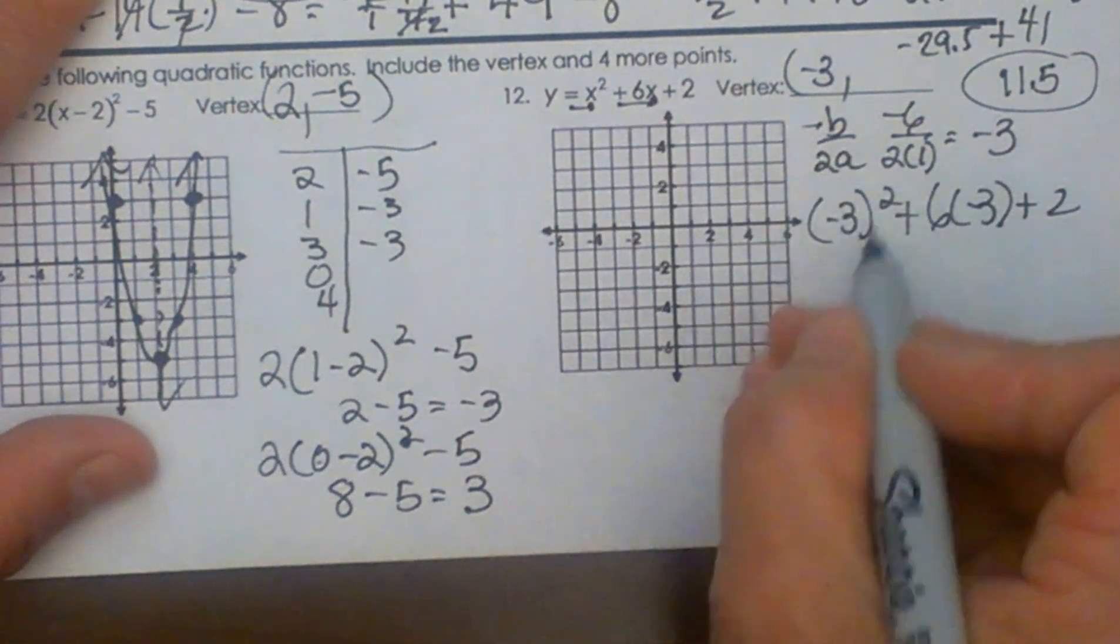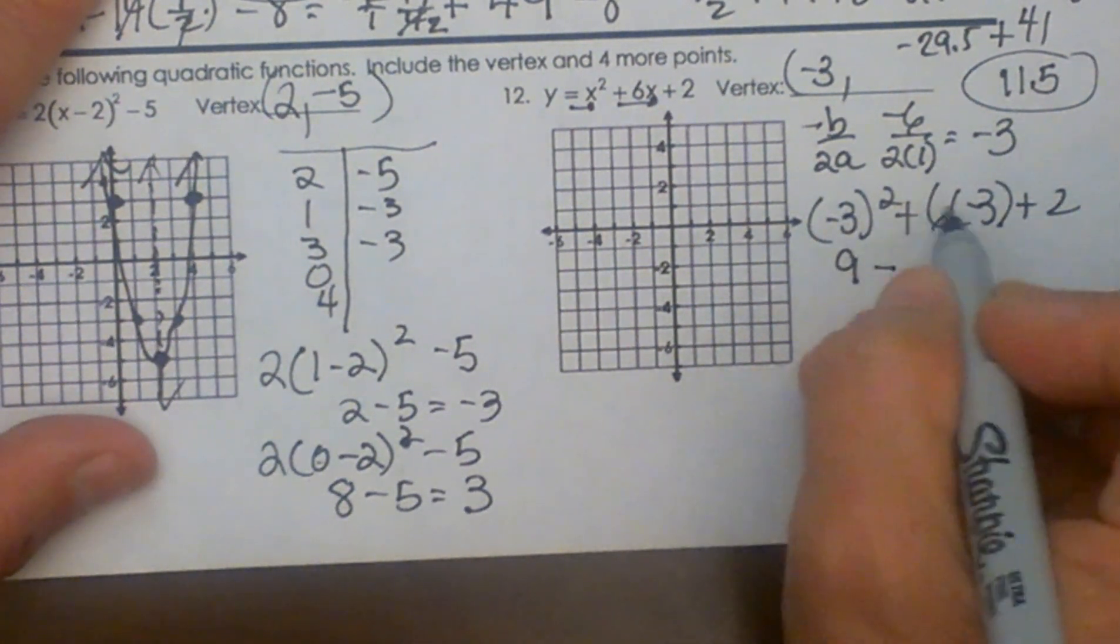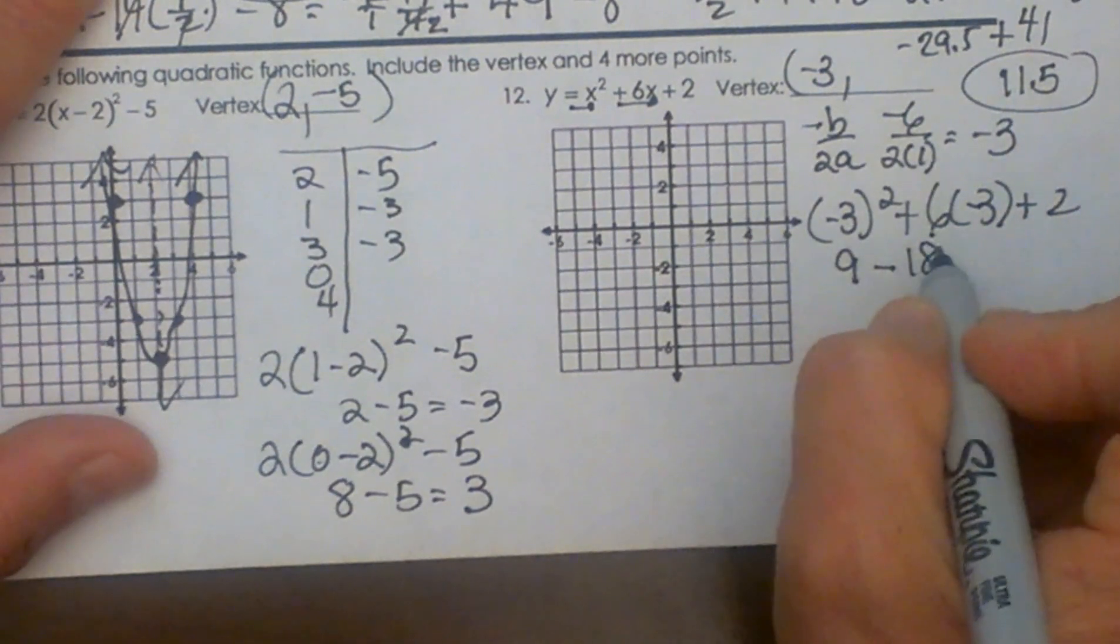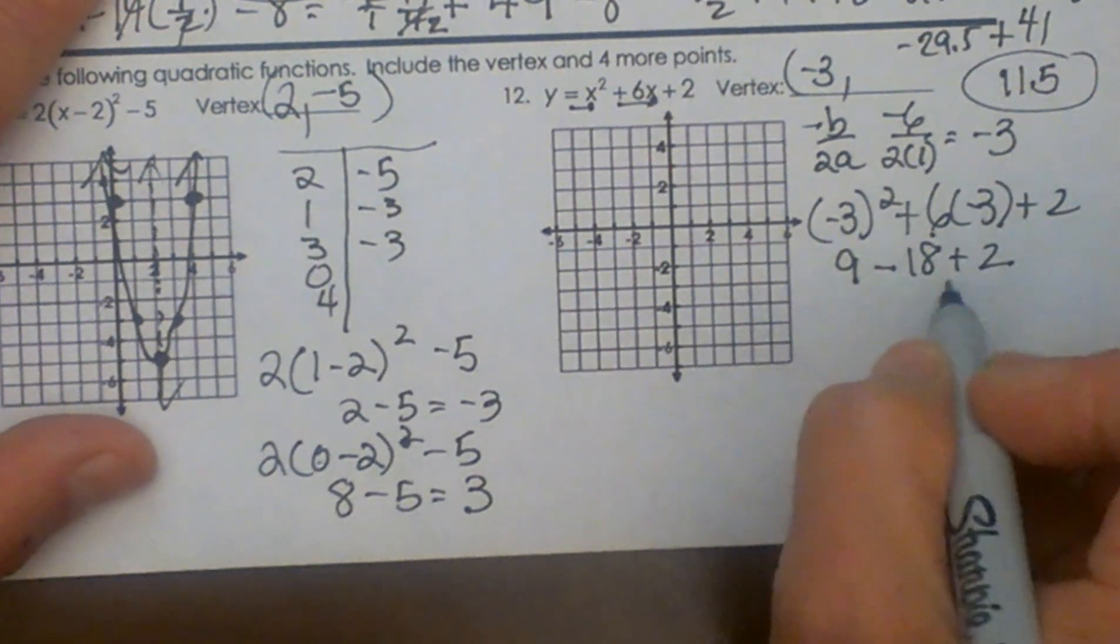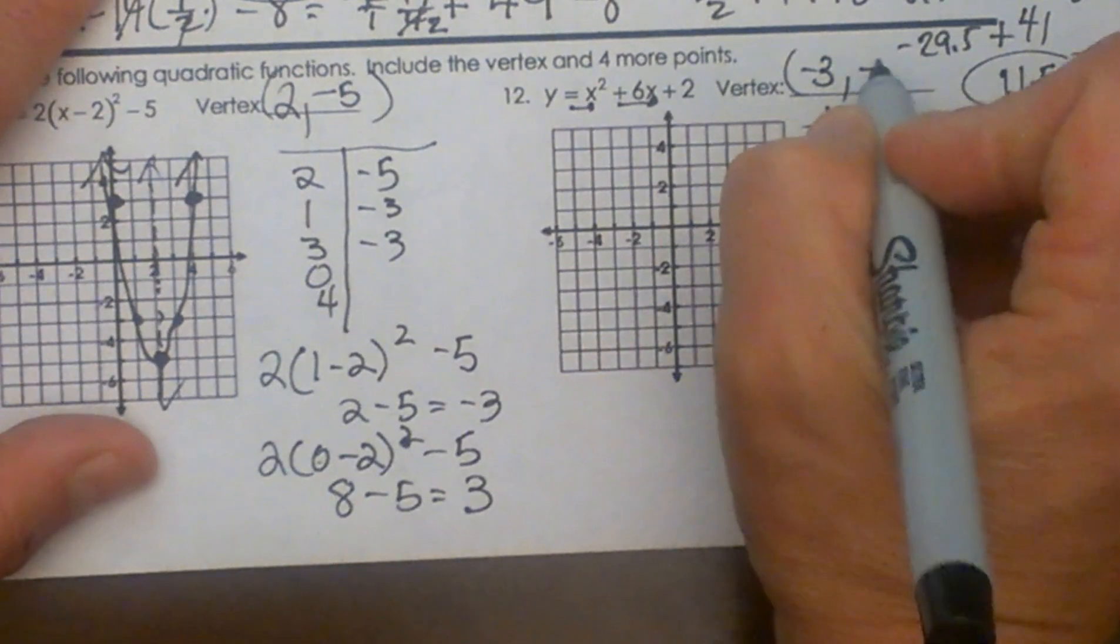So negative 3 quantity squared. I'm squaring the negative 3. That's going to give me positive 9. Minus, well 6 times negative 3 is 18 plus 2. So that's going to give me negative 9 plus 2 which is negative 7. That's my y coordinate.